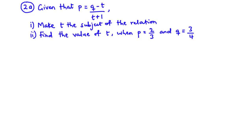Given that p is equal to k minus t over t plus 1, make t the subject of the relation — that is part i. And then part ii, find the value of t when p is 2 over 3 and k is 3 over 4.